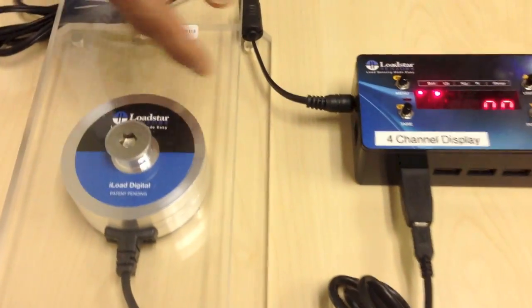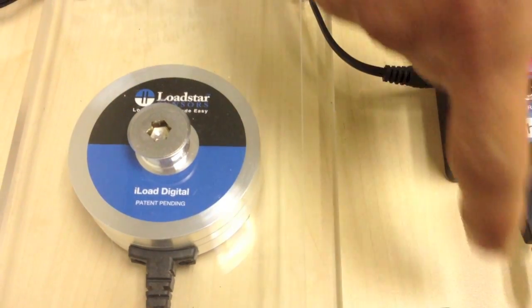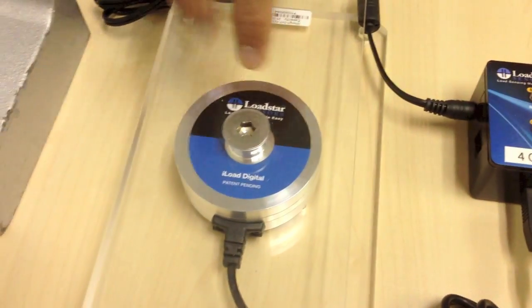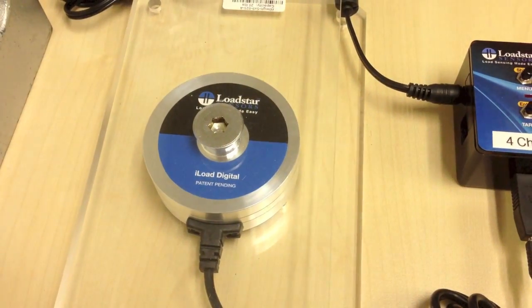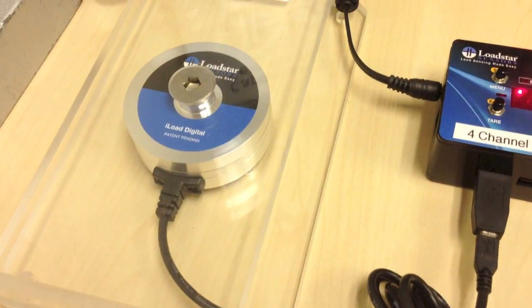As you can see here, this is our iLoad TR series digital load cell, and it has direct USB output via this USB connector. If you go back here, you can see that we have just placed it in between two platforms to make it a little weight scale. So it's really easy to build a weight scale with our sensor.